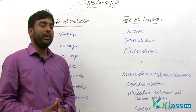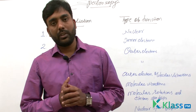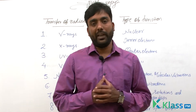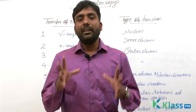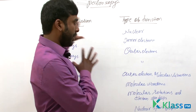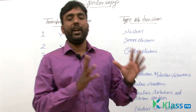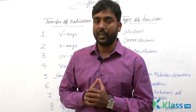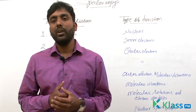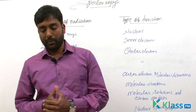Radio waves cause nuclear spin flips — changes in the nuclear spin. These are the different types of radiation and what kind of transition they cause in a particular substance, like atoms and molecules. That we have seen in this table. Thank you.